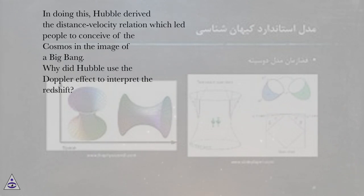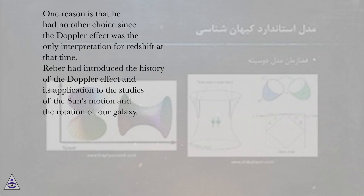Why did Hubble use the Doppler effect to interpret the redshift? One reason is that he had no other choice since the Doppler effect was the only interpretation for redshift at that time. Raber had introduced the history of the Doppler effect and its application to the studies of the sun's motion and the rotation of our galaxy.